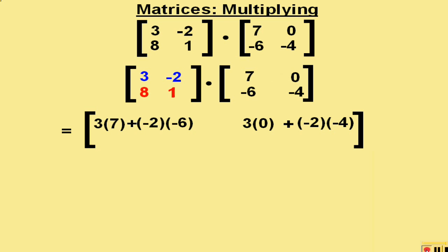We now look at the second row of the first matrix and do the same thing with 8 and 1. 8 times 7 plus 1 times negative 6. And this becomes our third number in our answer matrix.